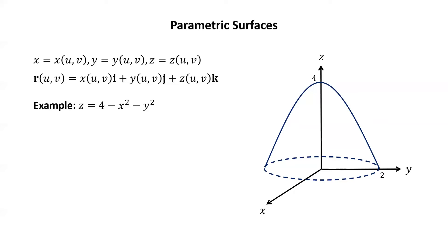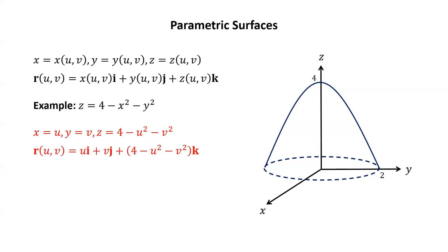There are infinitely many different ways to parametrize this paraboloid. I'm going to go over two pretty simple parametrizations. For the first one, we can simply observe that z is a function of x and y, so we could just let x and y themselves be the parameters. Just to stress the fact that x and y are parameters, I'm going to rename them u and v. So we'll let x equal u, y equal v, then z equals 4 minus u squared minus v squared. The corresponding vector-valued function is r of uv equals ui plus vj plus (4 minus u squared minus v squared)k.